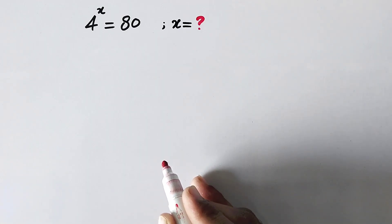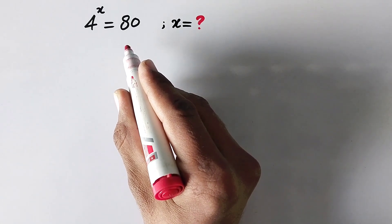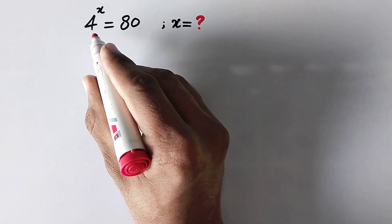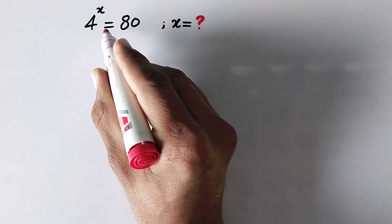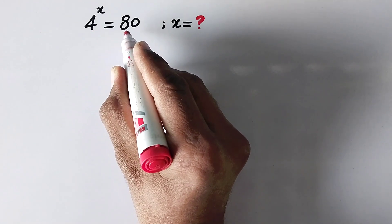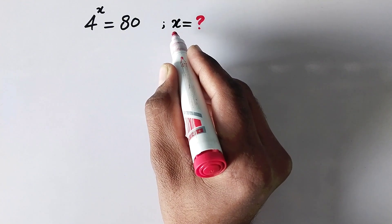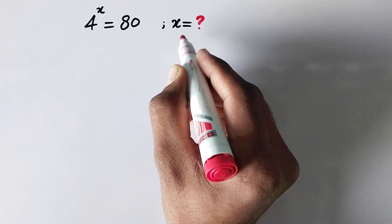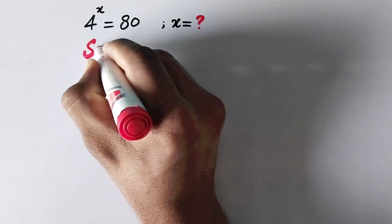Hello everyone and welcome to Explored Maths. Today we have to solve the problem: 4 raised to the power x is equal to 80, and we have to find the value of x. So let us see the solution.